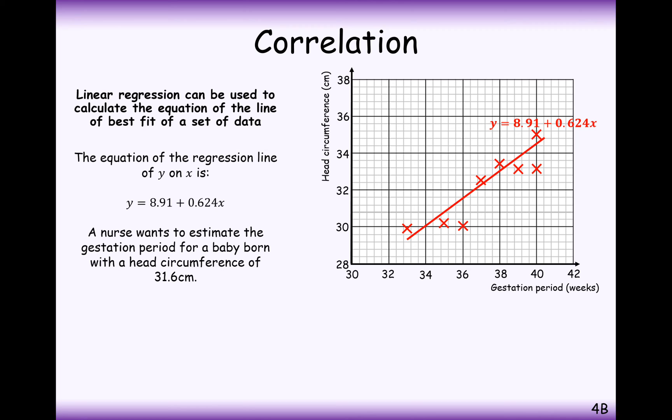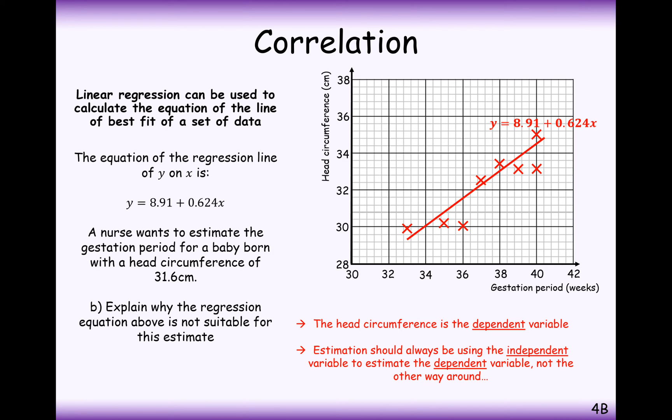The posh words that we give to these are interpolation, when it's inside our region of values, and extrapolation, when it's outside of our data values. Explain why the regression line may not be a suitable estimate. The head circumference is the dependent variable, so it's very difficult to go from the dependent variable and the head circumference value to go across and down. Estimation should always be the independent variable to estimate the dependent variable, not the other way around.